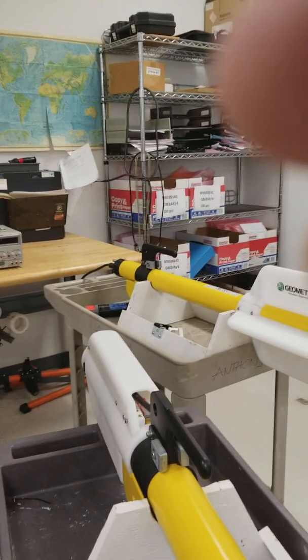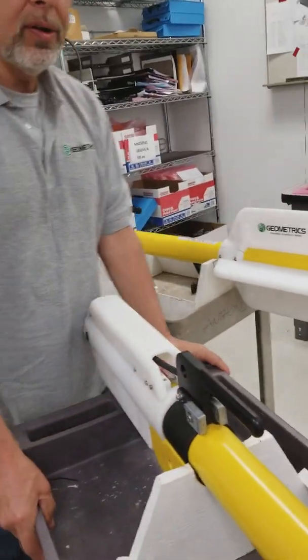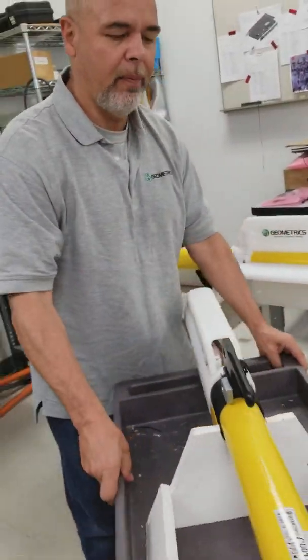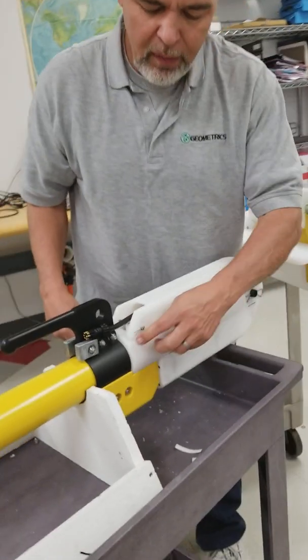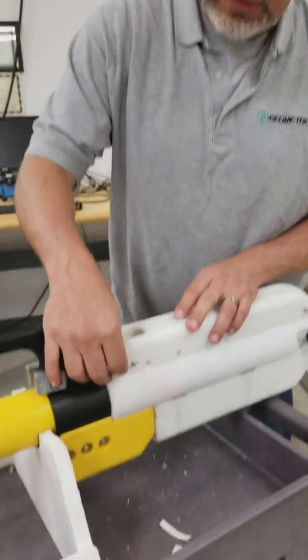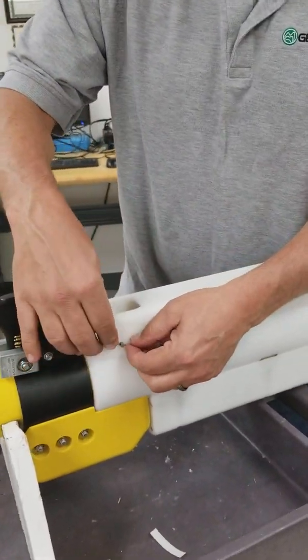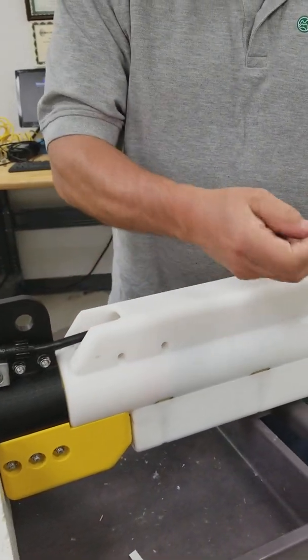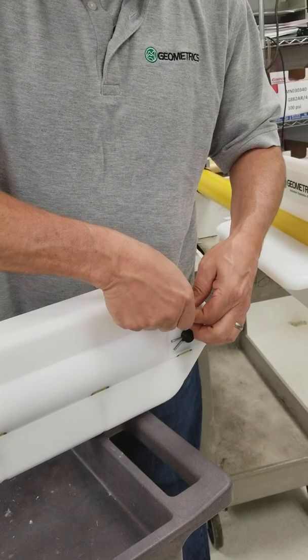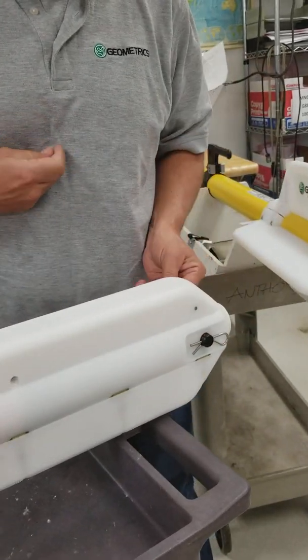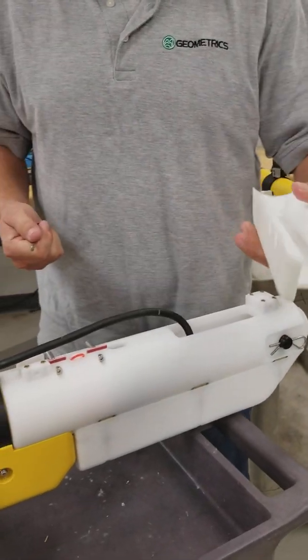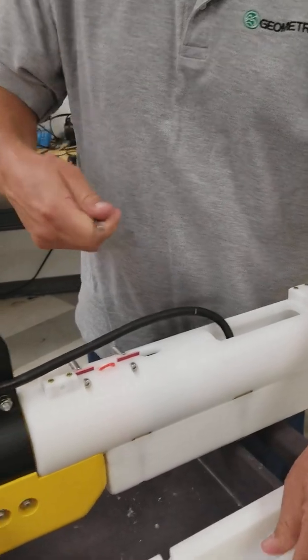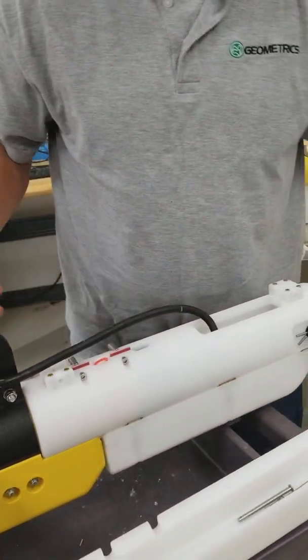So the first thing you want to do is go ahead and remove what we call the cotter pin clips. You just slide these out. This is called the cable cover.